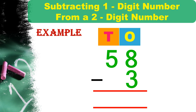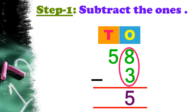Next, subtracting a one-digit number from a two-digit number. Example: subtract 3 from 58. Here also we will perform the column method of subtraction, writing the numbers one below the other and then subtracting. Step 1: Subtract the ones. 8 ones minus 3 ones — count back 3 from 8: 7, 6, 5. So write 5 in the ones column.